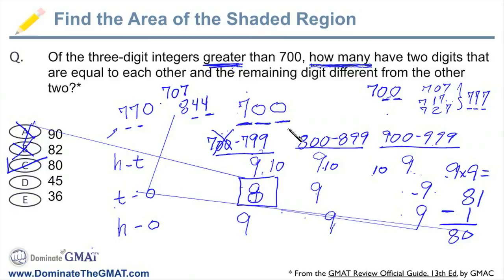But again, we have to account for the fact that 777, 888, 999, those numbers don't count because all three digits are the same and the question only wants two of them to be the same. And if you pick D or E, you just flat out missed something. So the correct answer is C.